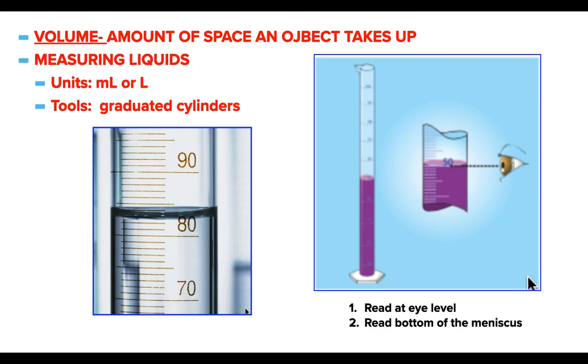So to calculate density, we're going to need to calculate volume, and then mass. Volume is the amount of space an object takes up. We can also sometimes say its capacity, how much it holds. How do we measure liquids in science? The units that we use are either going to usually be milliliters or liters. We often use graduated cylinders at this level.